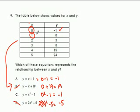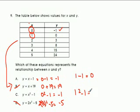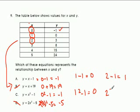Let's try x equals 1. For A: 1 minus 1 is 0, which is true. For C: 1 squared minus 1 equals 0, also true. We need to try another value. For x equals 2: A gives 2 minus 1 equals 1. C gives 2 squared minus 1, which is 4 minus 1 equals 3. So C has to be correct because it matches for all the values we tested.